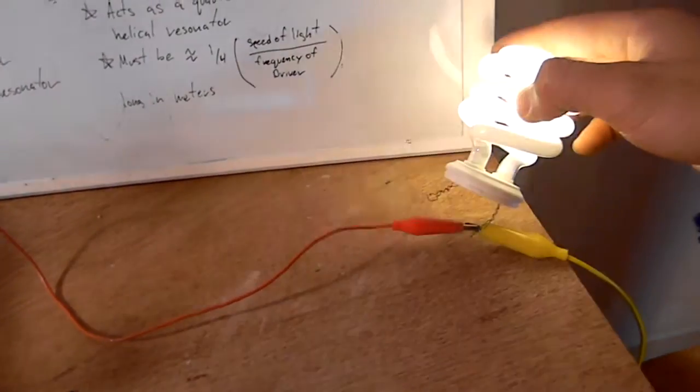It has trouble staying in tune. It's really finicky. But now we base feed it into here and this thing acts as a quarter wave resonator and it works so well that we can get sparks that are almost an inch long.